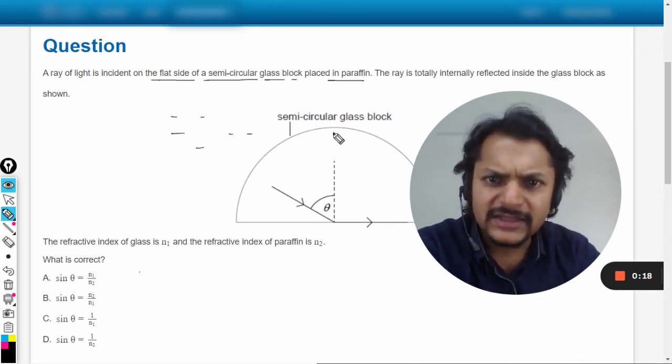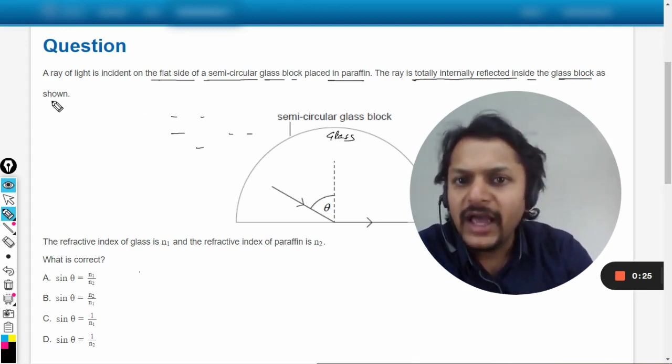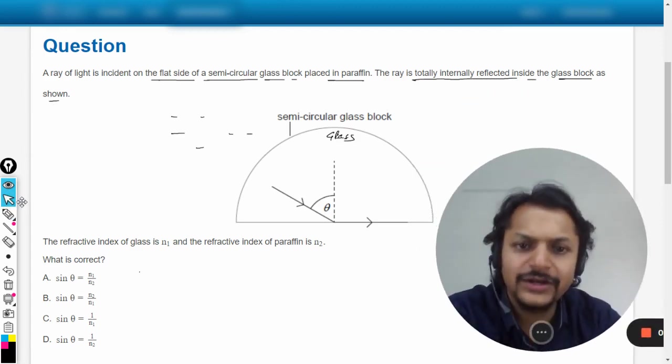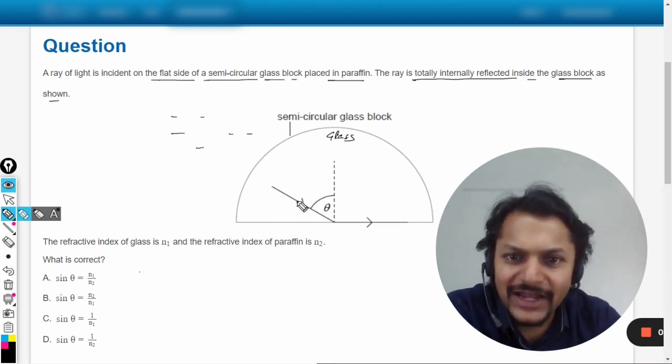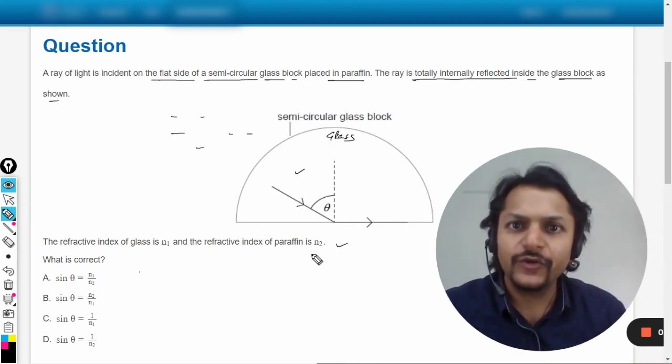And this is the glass block. The ray is totally internally reflected inside the glass block as shown in the figure. So you can just move me a little and you can see this is what is happening. So the light is coming from the denser medium to the rarer medium, so it is the only condition for TIR to take place.